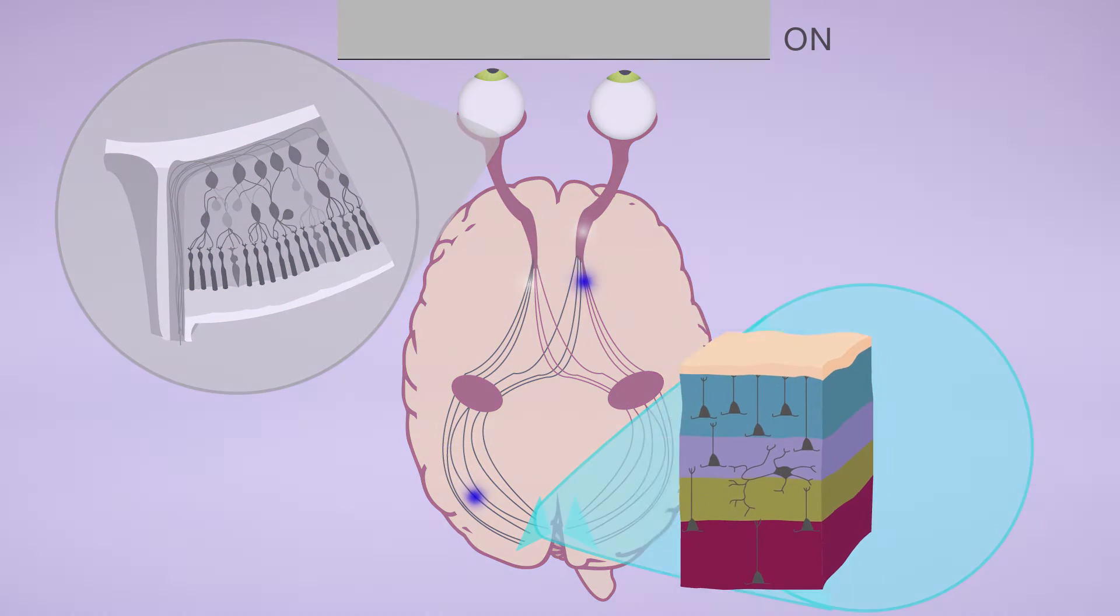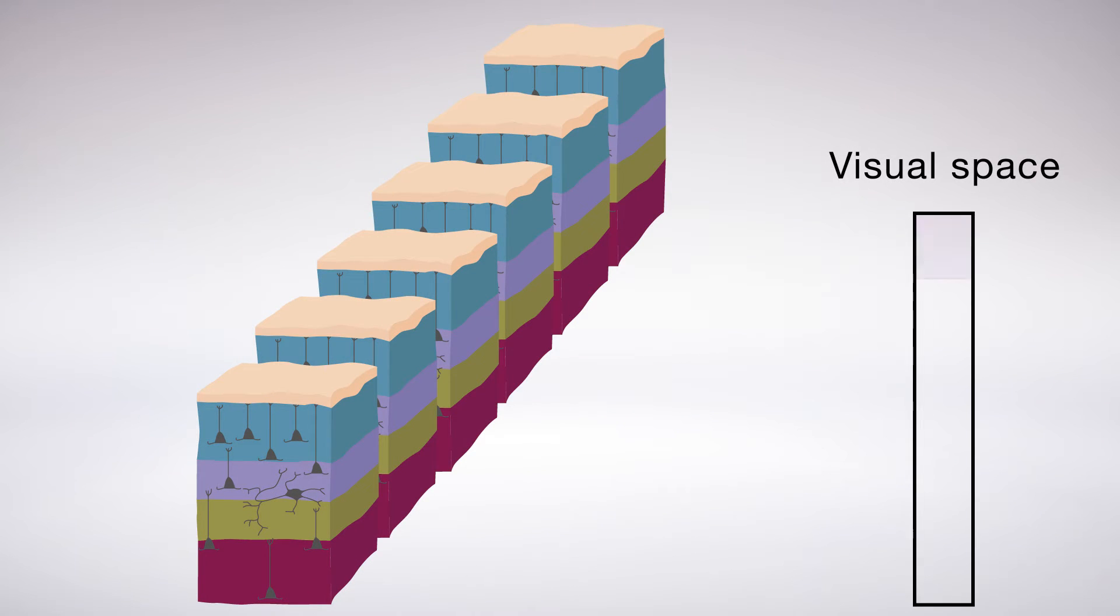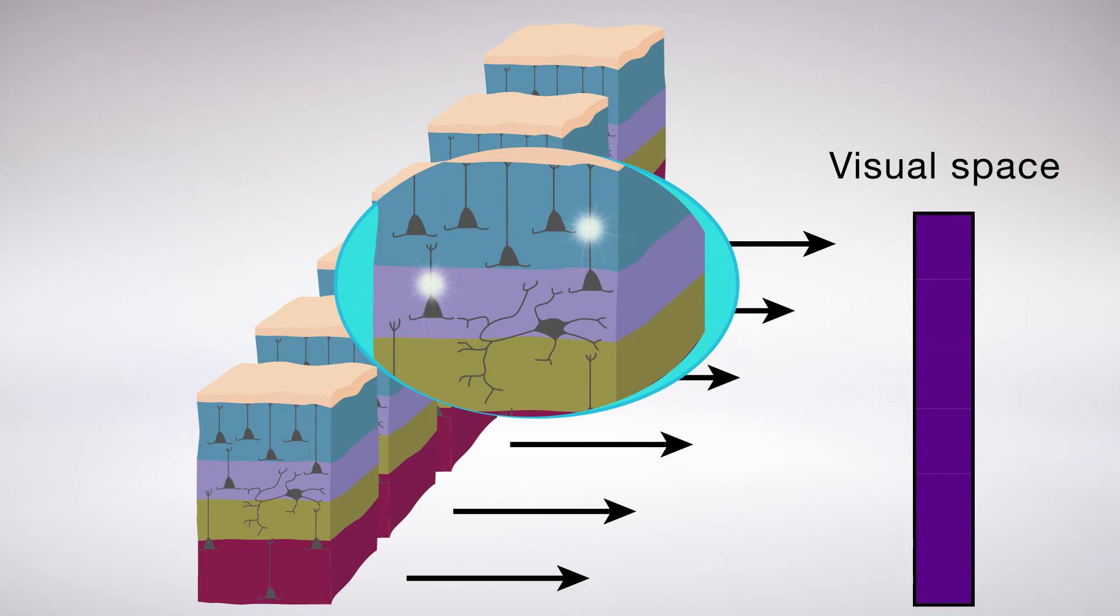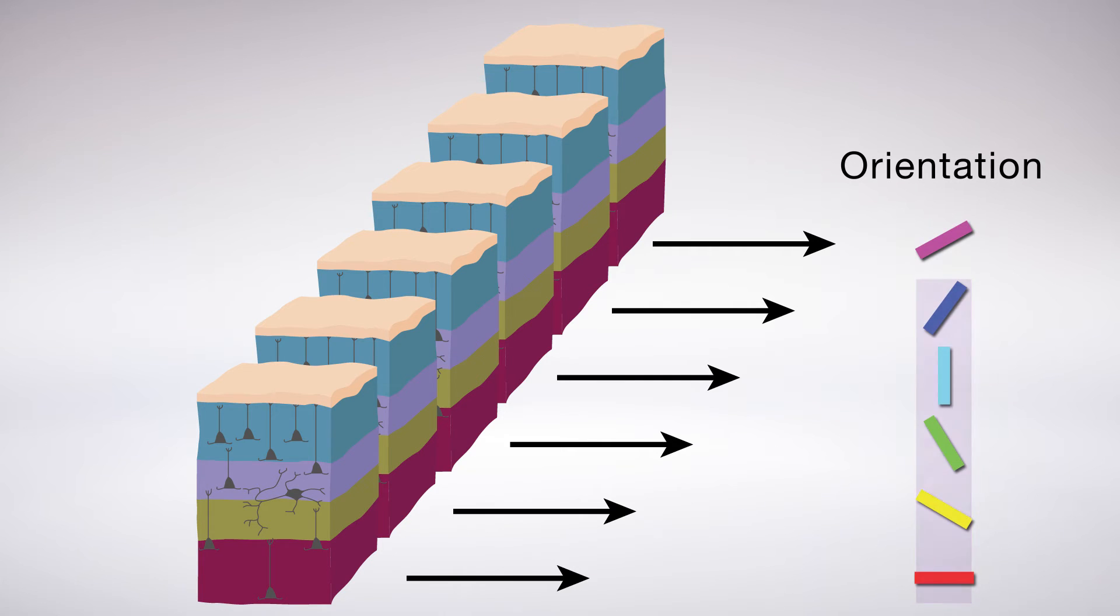To create a neural representation of location, neighboring columns of these neurons handle little bits of adjacent visual space in a one-to-one mapping. Individual neurons respond selectively to particular orientations and are also organized in columns, with each stack responsible for a single angle and bordering columns covering other angles.